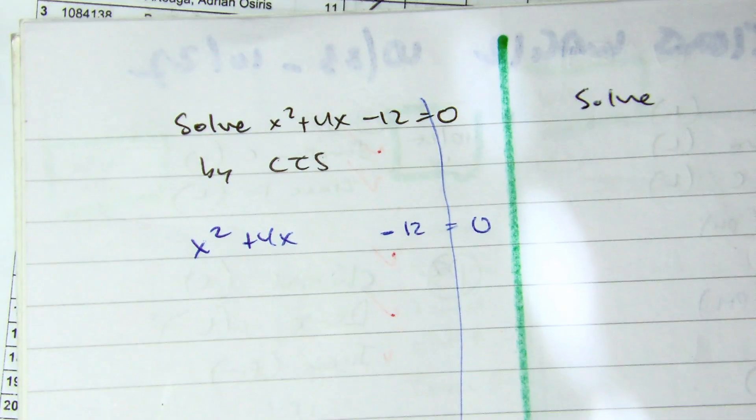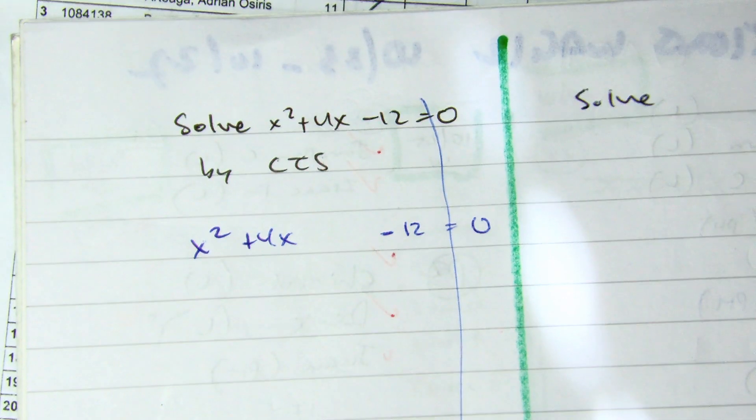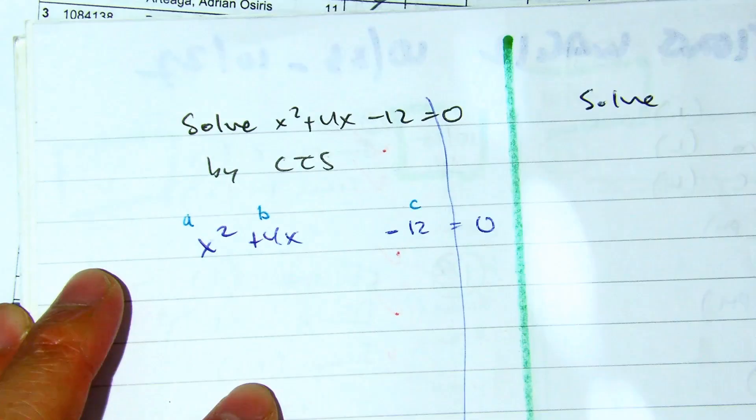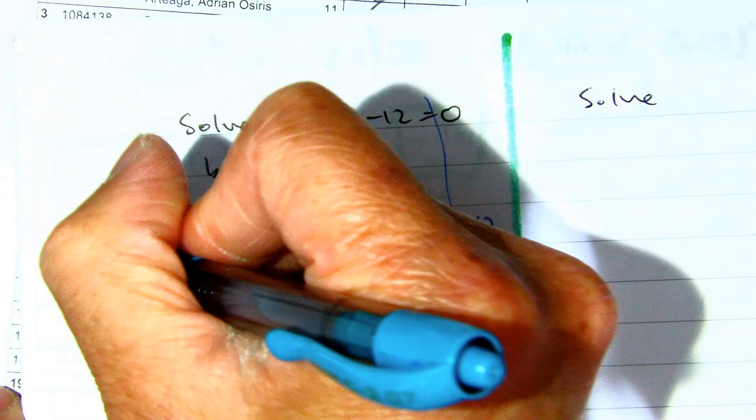Then it tells me to complete the square. Well, this is your a value, b value, c value. To complete the square...